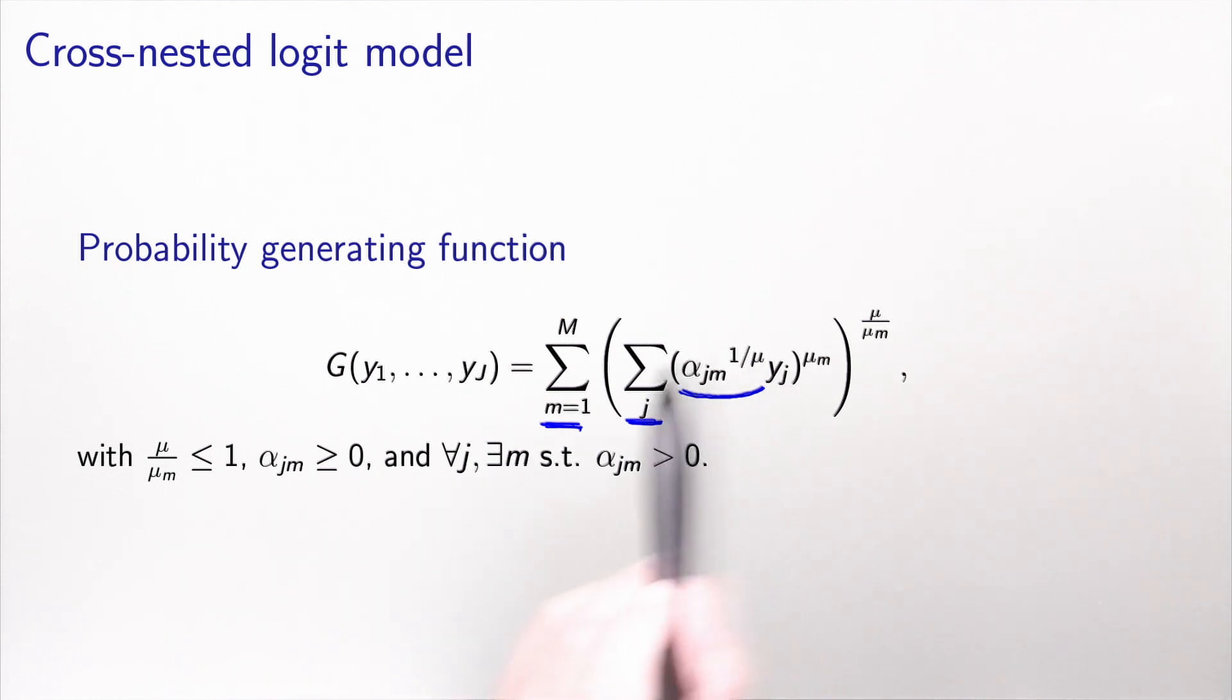Then you raise this quantity to mu_m. So mu_m is the nest parameter of nest m. And then the whole thing here is raised to the mu divided by mu_m. As for the nested logit model, this ratio here must be between 0 and 1.